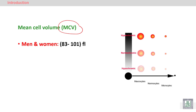We can see very small red blood cells called microcytes, and very large ones called macrocytes. In between the small and large we have normocytic red blood cells of normal volume. The range of the mean cell volume (MCV) is from 83 to 101 femtoliters, though this may differ slightly from one textbook to another.